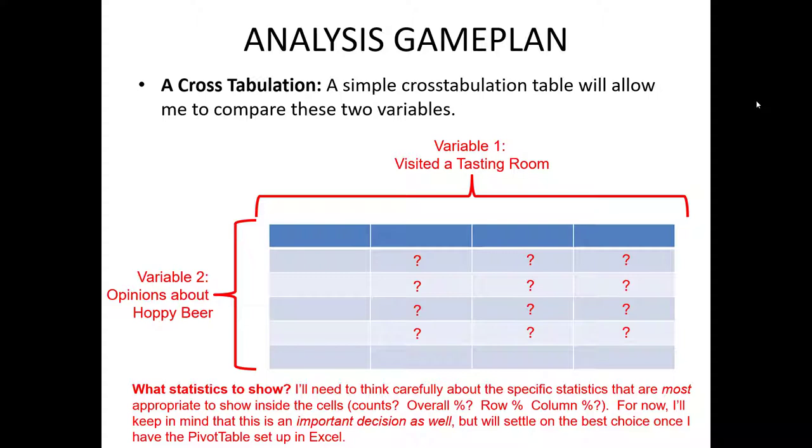Should it be a count, the overall percentage, the row percentage, the column percentage? For now, we're just going to keep in mind that picking the right statistic inside of our cross tab is going to be essential. But we'll settle on that right choice when we're actually designing the pivot table in Excel. Just keep that floating in the back of your head, though.